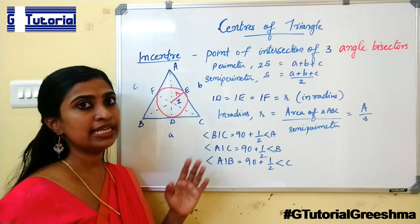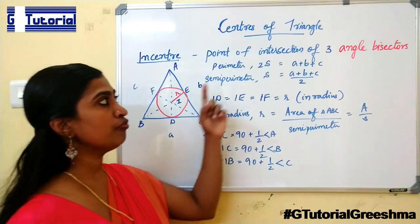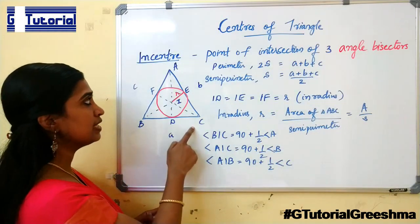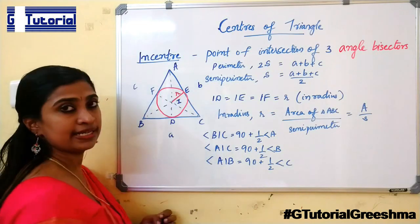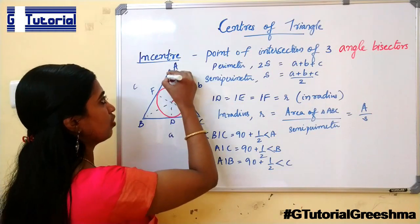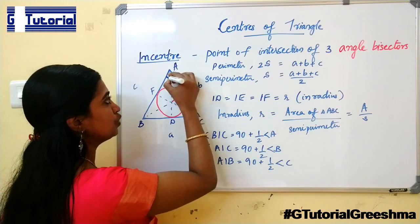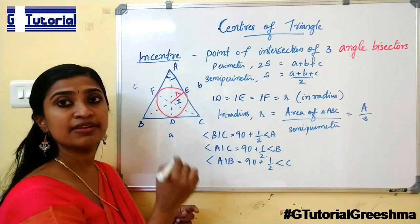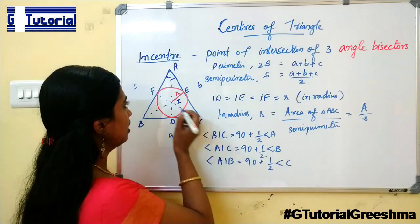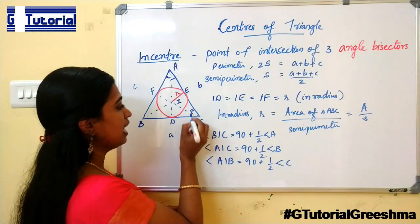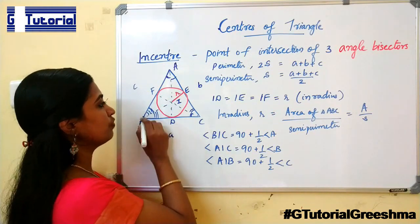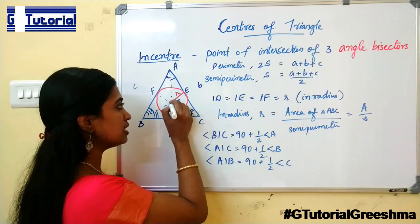First let us study about the incenter. Incenter is the point of intersection of three angle bisectors. If you are considering a triangle ABC, the three angles are angle A, angle B, and angle C. The angle bisectors are AD, which is the angle bisector of angle A — it divides the angle into two equal halves. Similarly, there is another angle bisector and BE is the third angle bisector. The point of intersection of these three angle bisectors is known as the incenter.